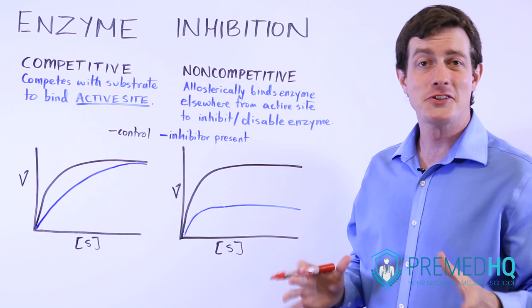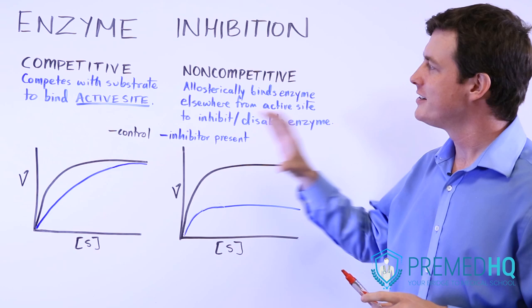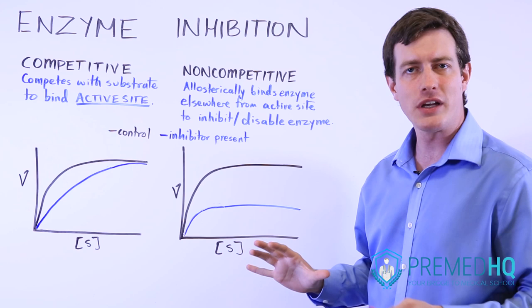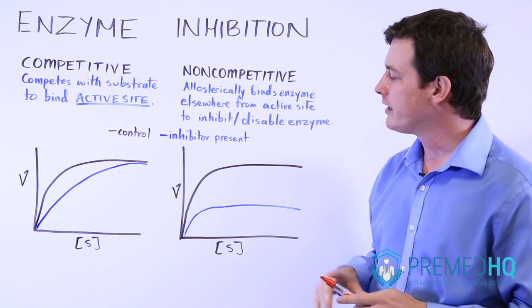There are two types of enzyme inhibition to be aware of for the MCAT, and these are very intimately related to your Michaelis-Menten plots. The Michaelis-Menten plots can help you understand the mechanisms for these two types of inhibition, and also if you're in the presence of some inhibitor, you can use a Michaelis-Menten plot to understand what type of inhibition is present.